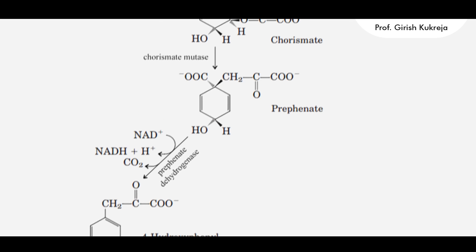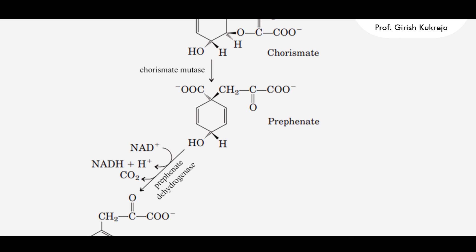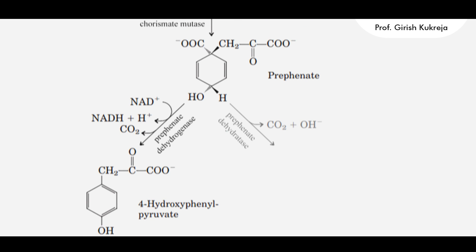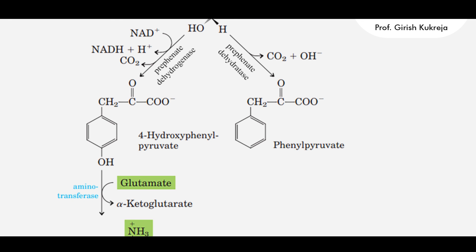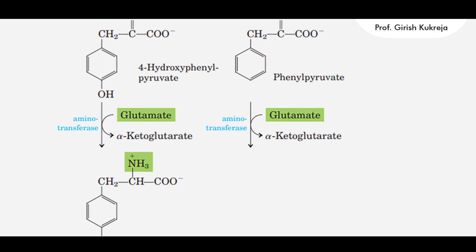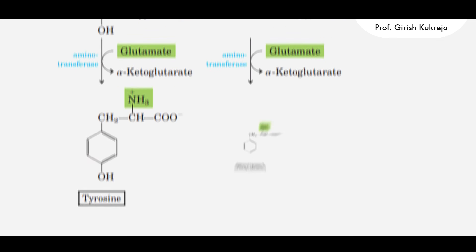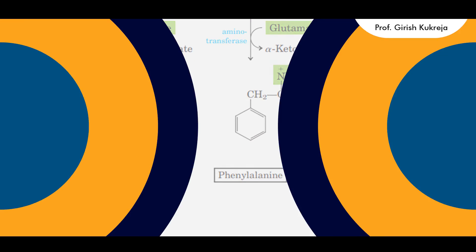In the phenylalanine branch, starting from prephenate, it is acted upon by prephenate dehydratase. With the removal of CO2 and OH-, phenylpyruvate is formed. This is then acted upon by aminotransferase, which transfers the amino group from glutamate to phenylpyruvate, forming phenylalanine.